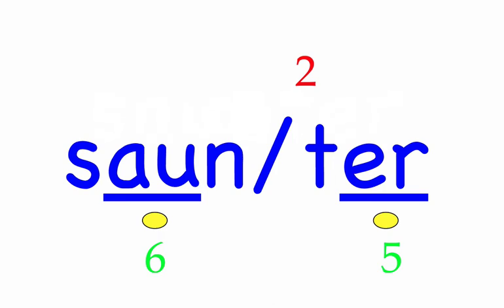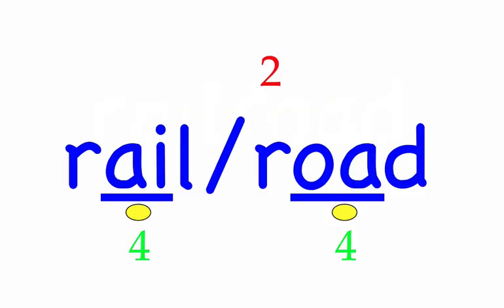Row eight. Railroad. The railroad crossing is dangerous. First syllable: rail, three sounds, R-A-L. Second syllable: road, three sounds, R-O-D. Railroad — mark the word.